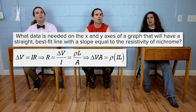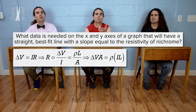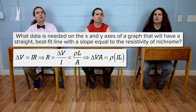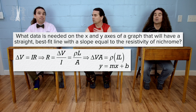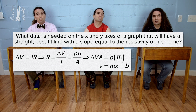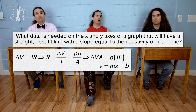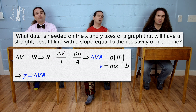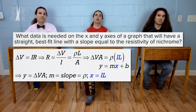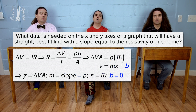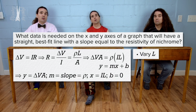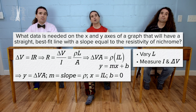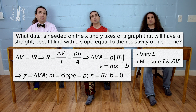How does that help us figure out what we need on the x and y axes? Because we know the slope-intercept form of a straight line is y equals mx plus b — y equals slope times x plus y-intercept. Comparing that to our original equation means we put electric potential difference times cross-sectional area on the y-axis, slope is the resistivity, current times length is on the x-axis, and the y-intercept equals zero. That means all we need to do is vary the length of the wire and measure current through and electric potential difference across the wire and we can get the resistivity of nichrome.